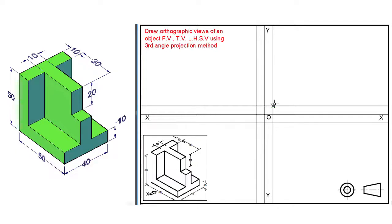Now mark the points in each quadrant as shown. These are the reference points for drawing a view in each quadrant. As we know, in the case of third angle projection method, we have to draw a front view in the third quadrant, top view above the front view, and left hand side view at the left side of the front view.